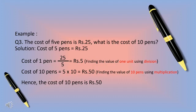Example 3: The cost of 5 pens is Rs. 25. What is the cost of 10 pens? Solution: Cost of 5 pens equals Rs. 25. Therefore, cost of 1 pen equals Rs. 25 divided by 5, which equals Rs. 5. Here, finding the value of 1 unit, we are doing division. So, cost of 10 pens equals 5 multiplied by 10, which equals Rs. 50. Finding the value of 10 pens, we are using multiplication. So, the cost of 10 pens equals Rs. 50.